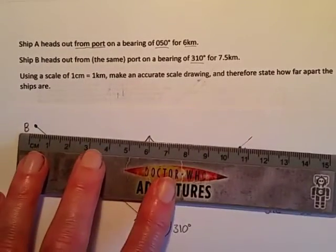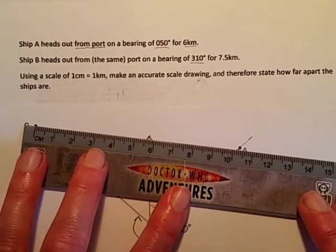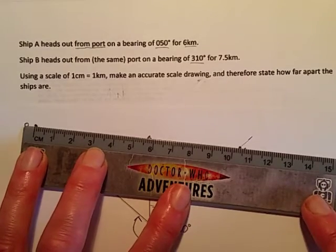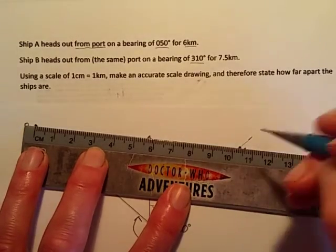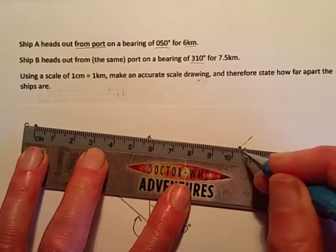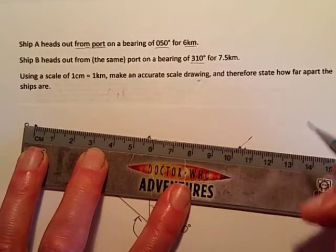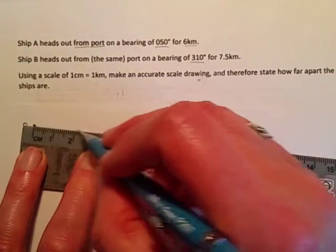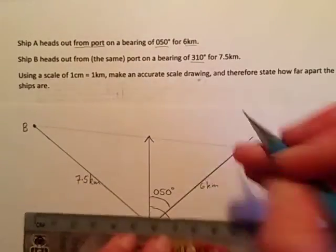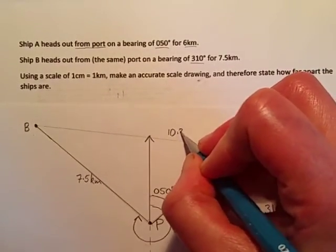So all you need to do is measure now the distance between ship A and ship B. Now I get, so we've got 10.3 centimetres from there to there. 10.3 centimetres.